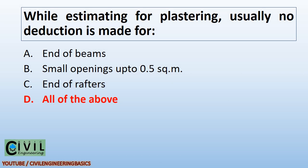While estimating for plastering, usually no deduction is made for ends of beams, small openings up to 0.5 square meters, ends of rafters — all of the above.